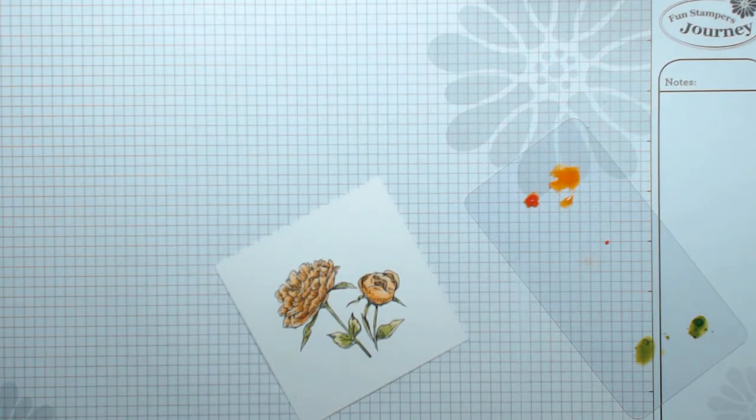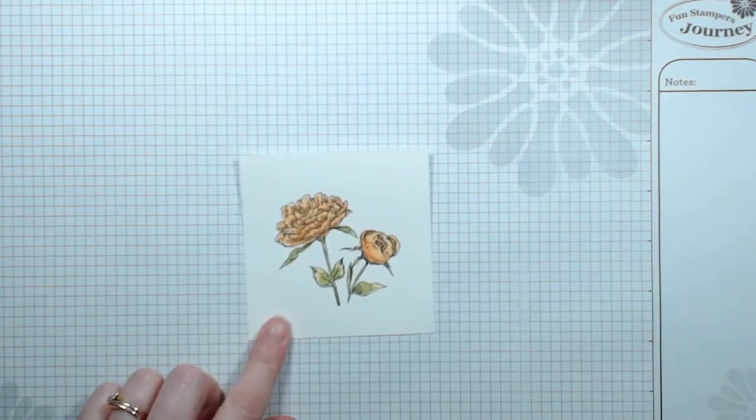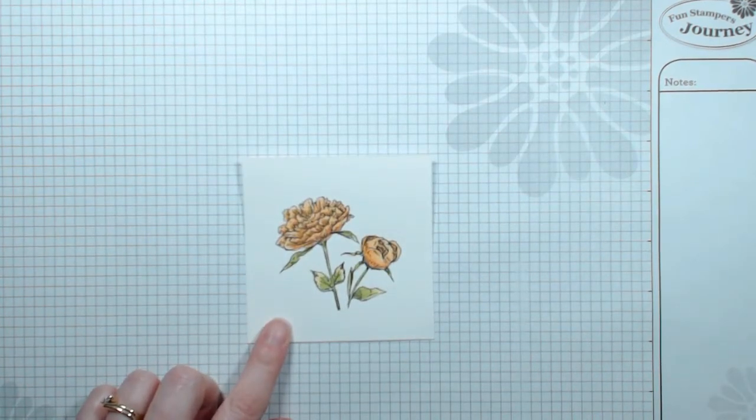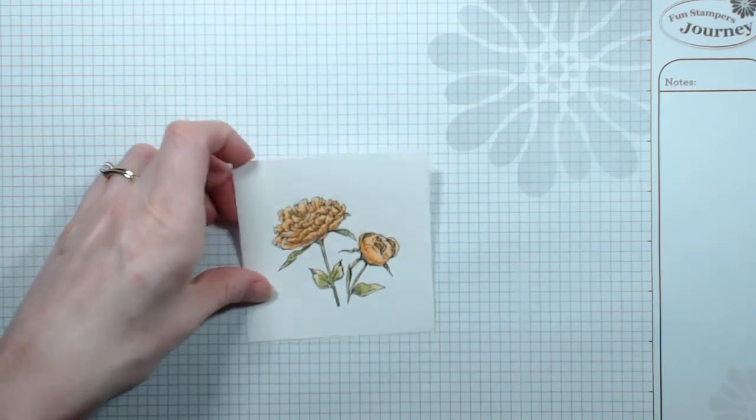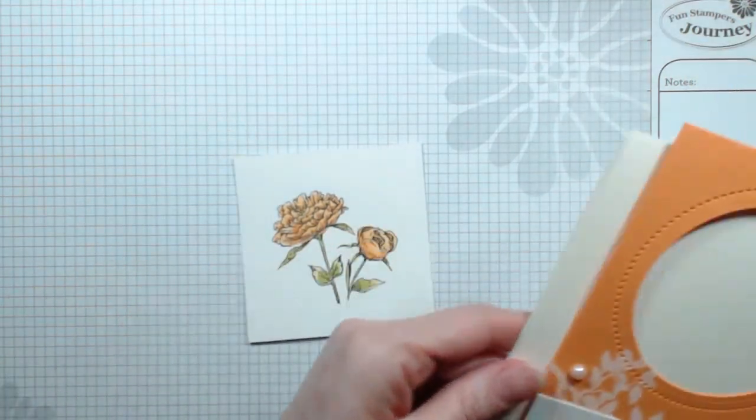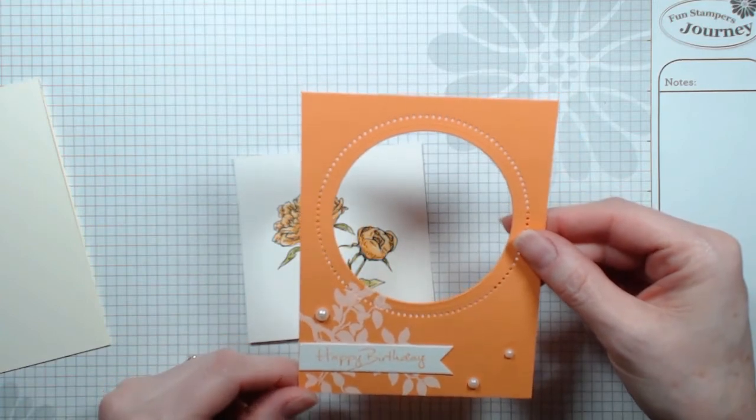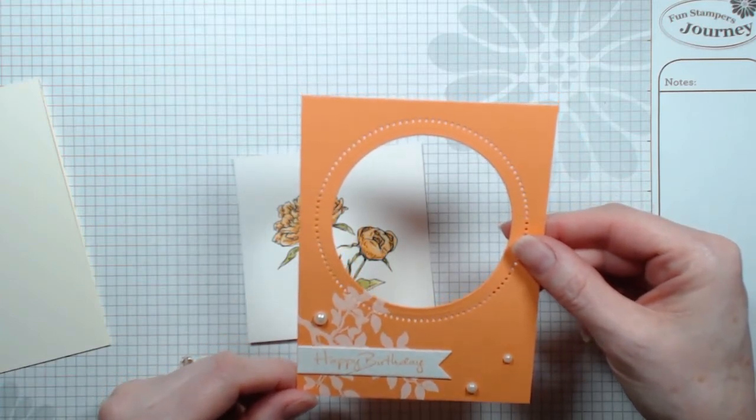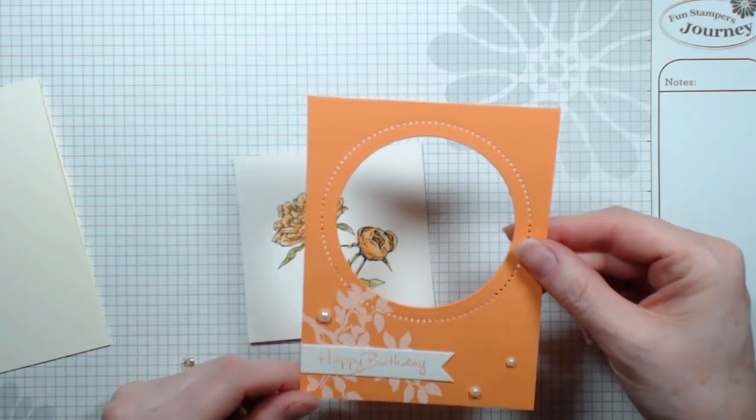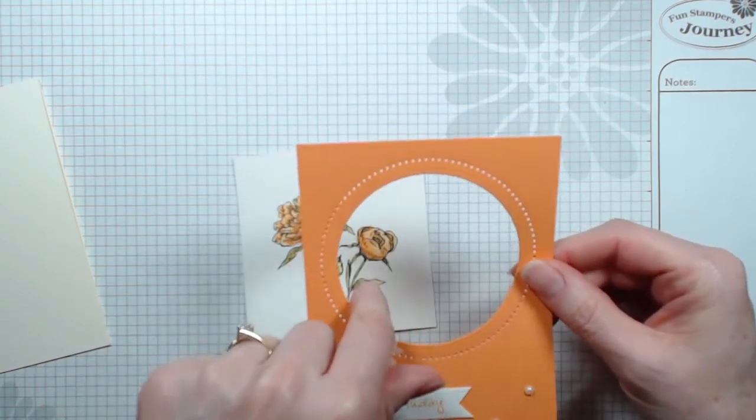This piece of paper is three and three-fourths inches by three and three-fourths inches. I cut out orange creamsicle and it is four and an eighth by five and three-eighths. As you can see I cut out a circle and used the extra die piece that pokes all the holes in it.